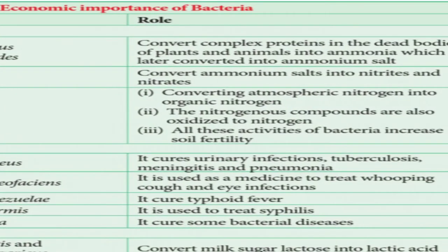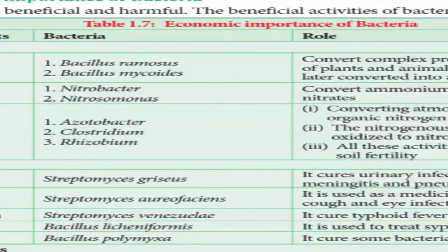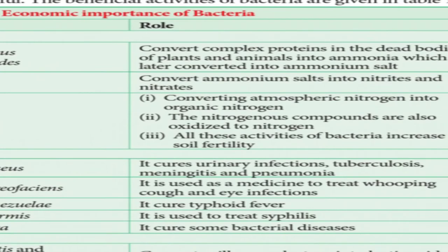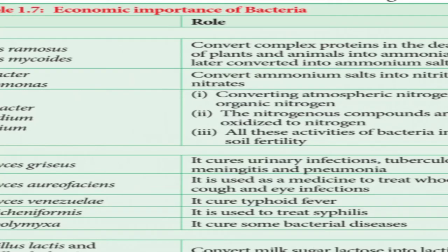Acetobacter converts atmospheric nitrogen into organic nitrogen. Nitrogenous compounds are also oxidized to nitrogen — for example, Clostridium can oxidize nitrogenous compounds like ammonium chloride to form nitrogen. All these soil activities increase soil fertility. Rhizobium, as discussed in the symbiotic relationship under heterotrophic mode of nutrition, fixes atmospheric nitrogen and gives it to the plant, enriching the soil with rich nutrients.